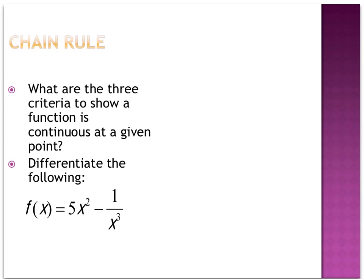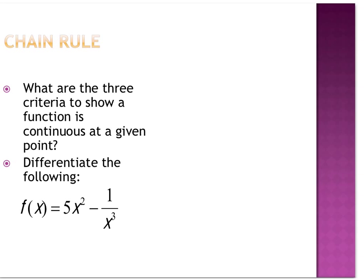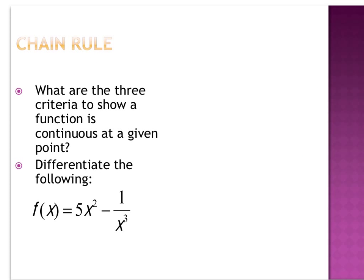What are the criteria to show a function is continuous at a given point? Remember, a function is continuous if you can draw it without lifting up your pencil. But a lot of times we have to be able to show that a function is continuous formally, not informally. Formally, you have to show that, first of all, you get an answer — so f of c has to exist.